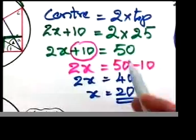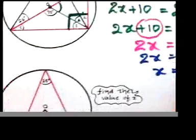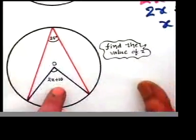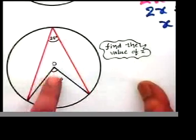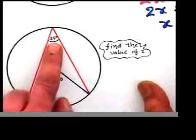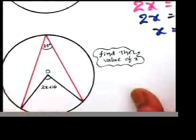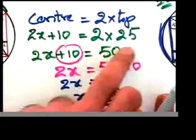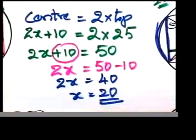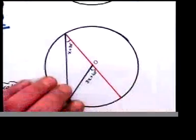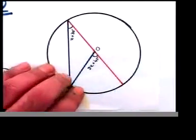All that we have done was we looked at the sum, we said right, angle at the center is twice the angle at the circumference. We applied the same concept, we made an algebraic equation and we solved that. If you look at the last one also, it's more or less the same type.